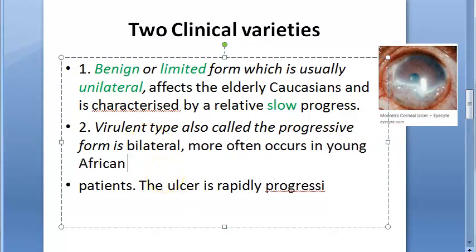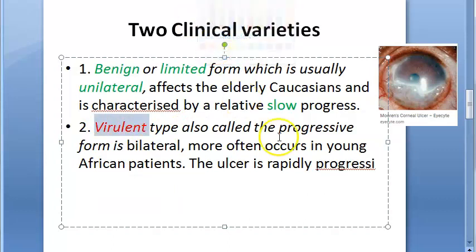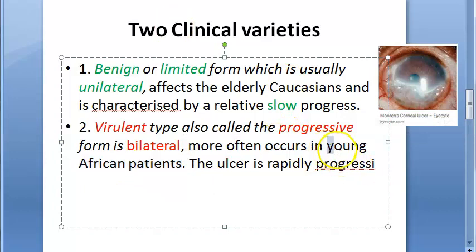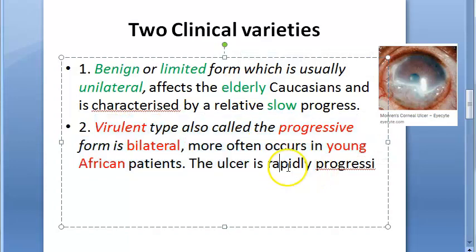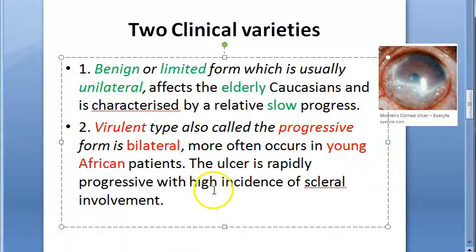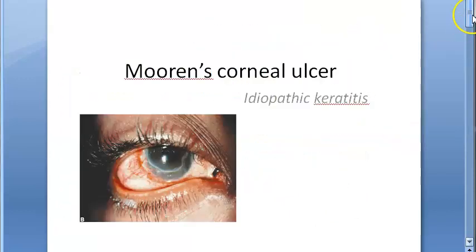The second is the virulent type. It is bilateral and occurs in young African patients. Unlike the benign form in elderly Caucasians, this type is rapidly progressive, bilateral, and there is a high incidence of scleral involvement — everything about this form is aggressive and severe.